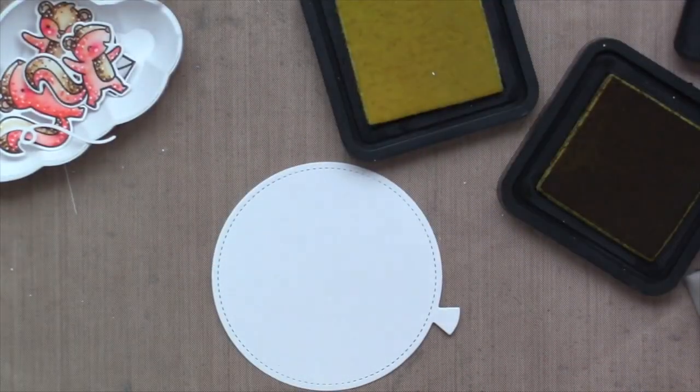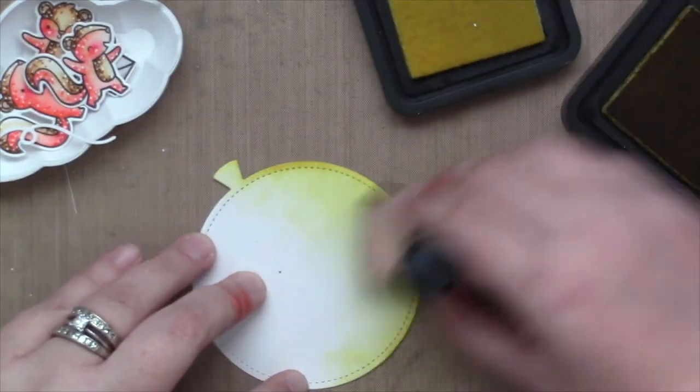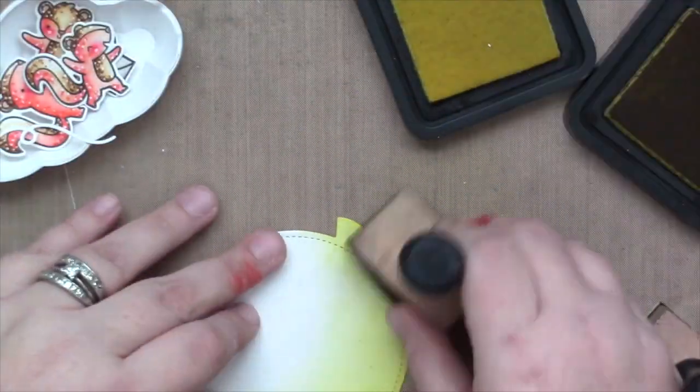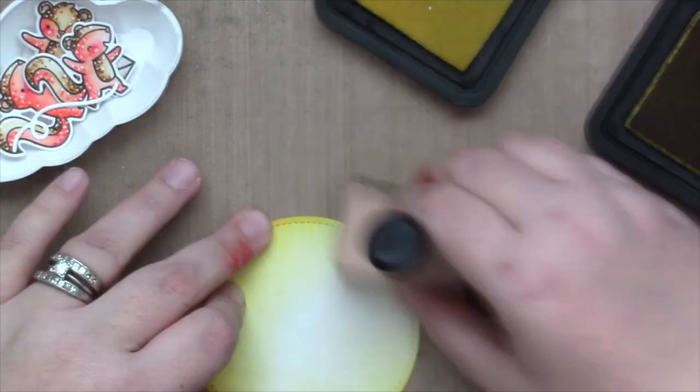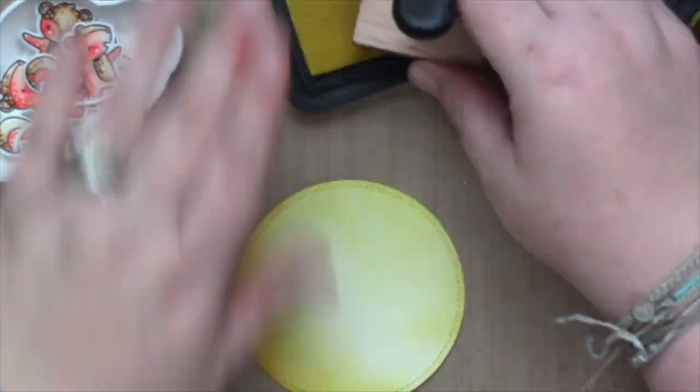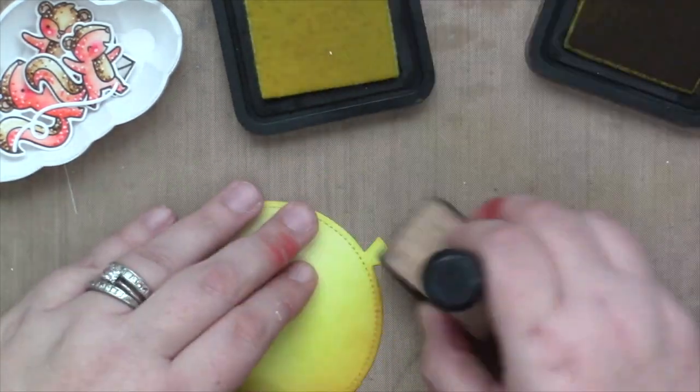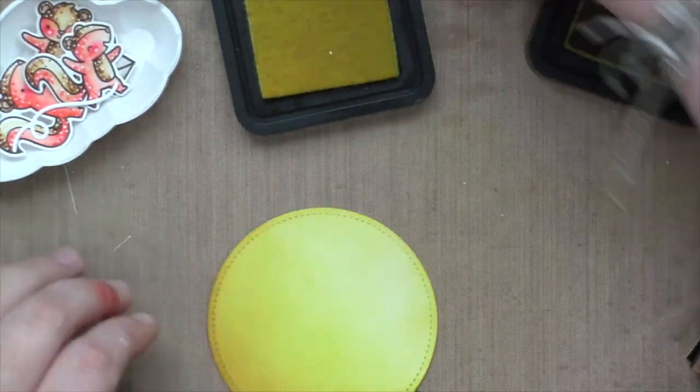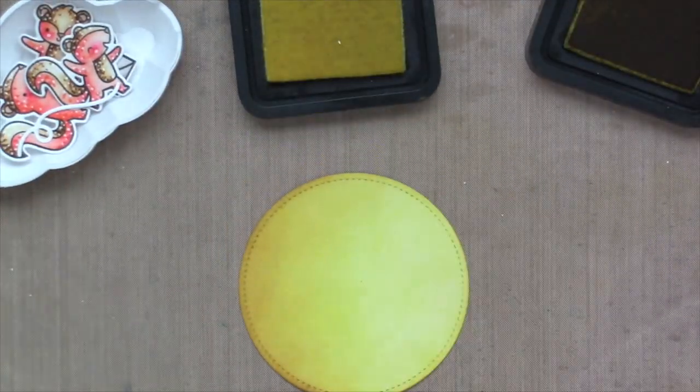The next step was to ink blend the balloon, the oversized balloon. I decided to go with yellows. I am using mustard seed and squeezed lemonade distress inks. I'm just starting by adding a little bit of color all over. I also did use fossilized amber for the darkest shadowy part of the balloon but I had a really light hand with that because that color can get dark real quick.